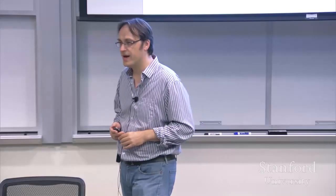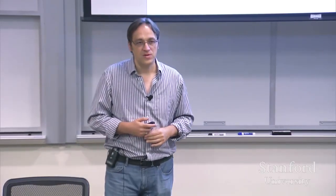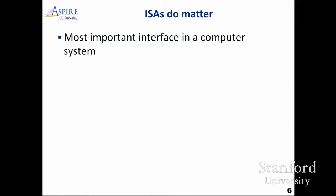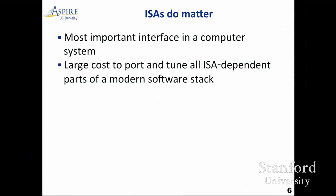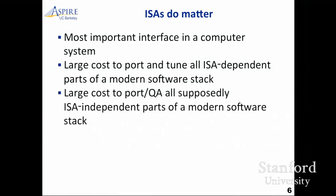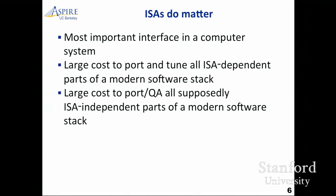The reason that ISAs do matter is that it's the most important interface in a computer system — it's where hardware meets software. There's a massive cost to port and tune all the ISA-dependent parts of a software stack. Just one small example: MIPS still doesn't have a very effective JVM. As well as that, there's all the stuff you don't expect, like the large cost to port, tune, and quality-assure all the stuff that's supposed to be ISA-independent but turns out it isn't, because those ports have ISA-dependent bugs. There's a lot of work to bring everything over to a new ISA.